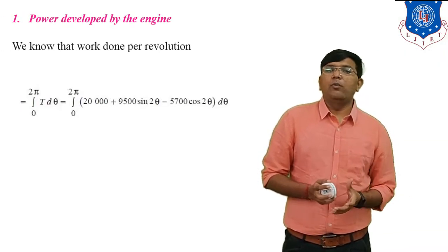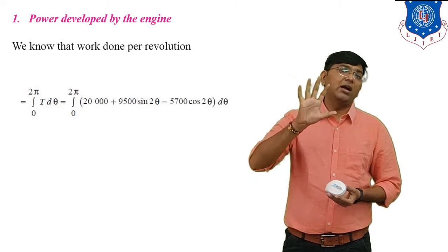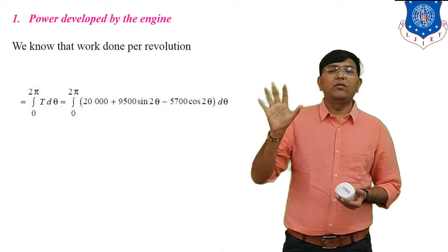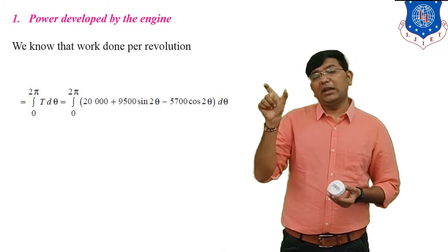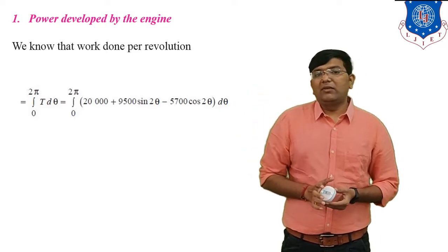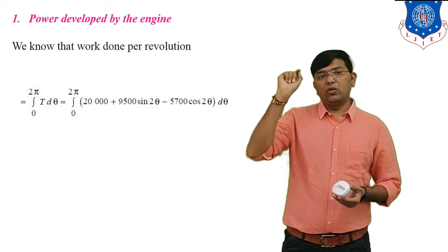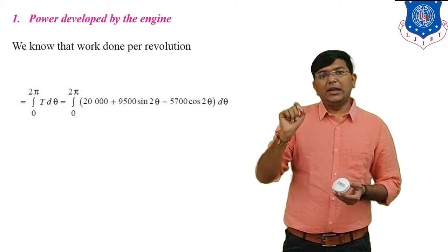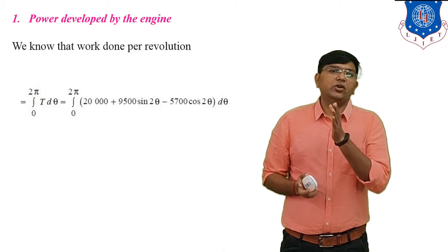First, we find power developed by the engine. We know that work done per revolution equals the area under the turning moment diagram curve, which is torque versus crank angle. So work done per revolution equals the integral from 0 to 2π of T·dθ. Substituting the equation: integral from 0 to 2π of (20,000 plus 9500·sin(2θ) minus 5700·cos(2θ))·dθ.